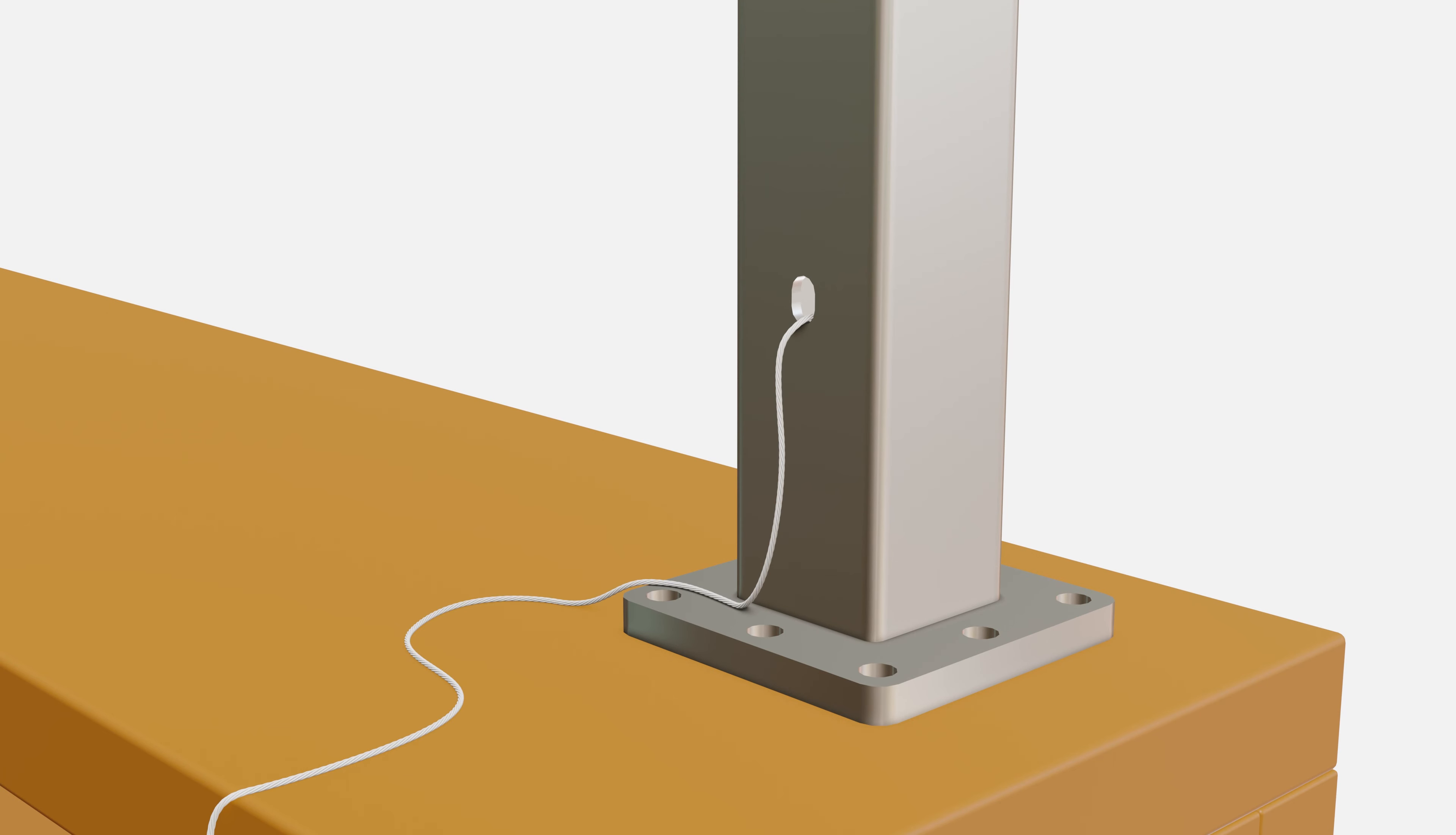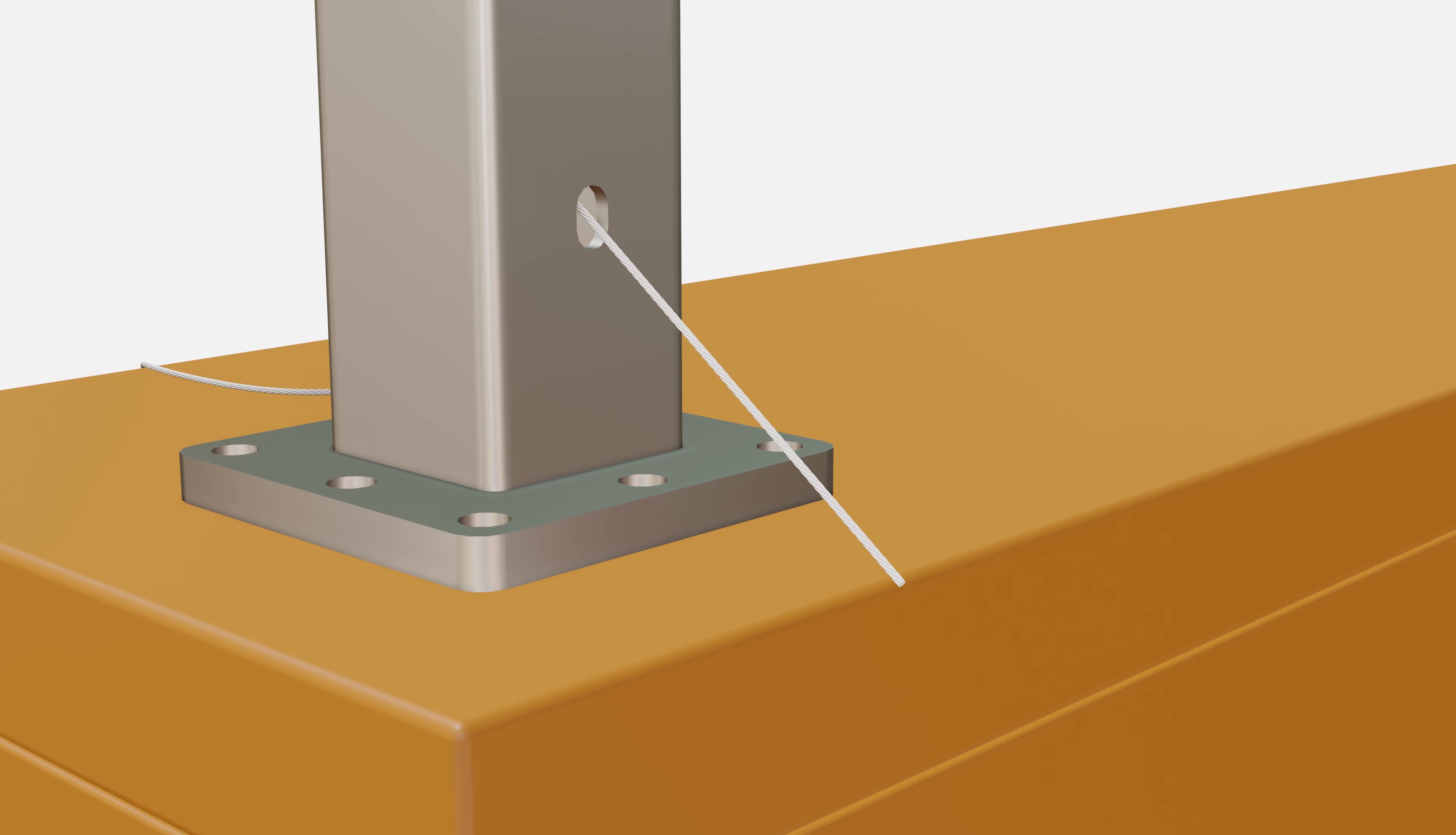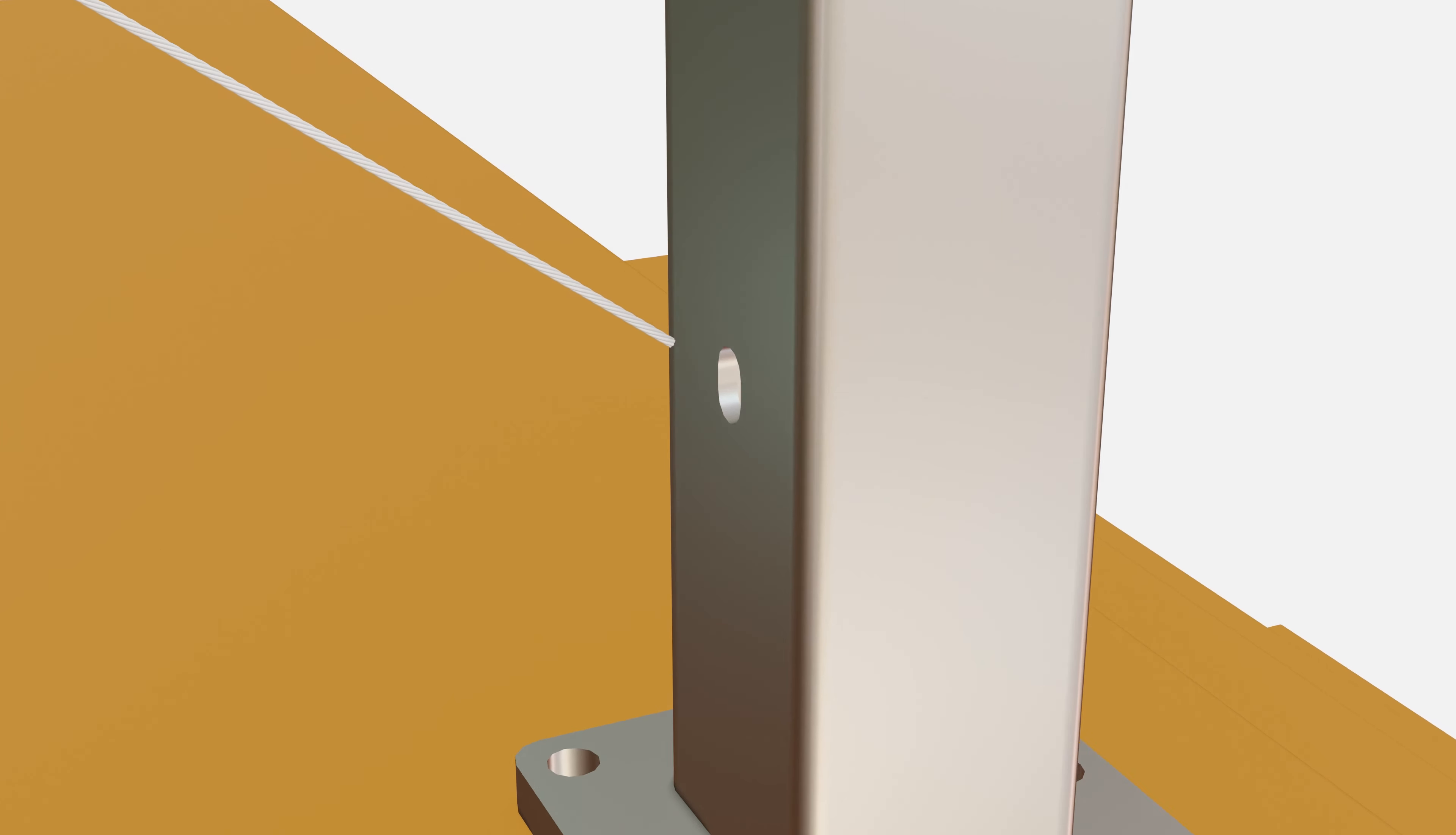Next, run a string through the bottom holes of each post to ensure that the infill will not hit the nosing of the treads. Hold the post steady during this step to avoid moving the post out of alignment.